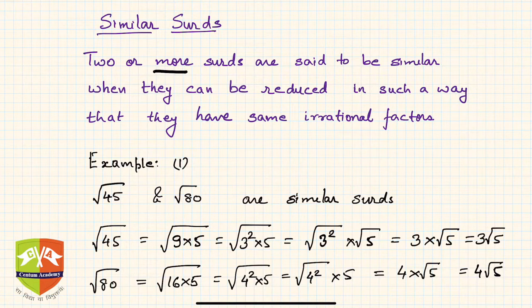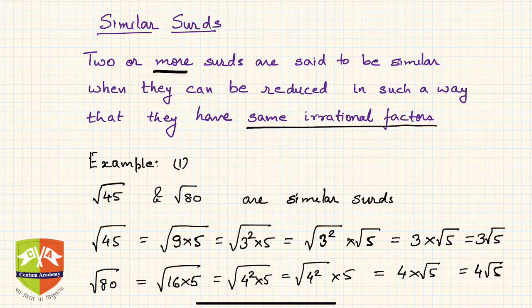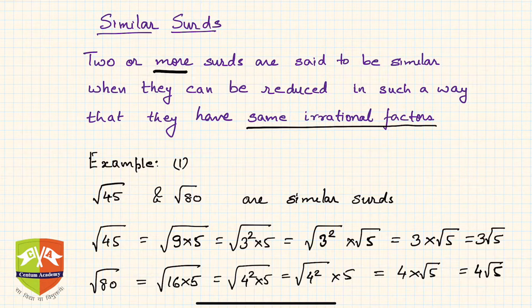Two or more SIRDs are said to be similar when they can be reduced in such a way that they have the same irrational factors. We learned how to convert a pure SIRD or a complete SIRD into a product of a rational and an irrational factor. So if after reduction the irrational factors are the same, then the SIRDs are called similar. Example: √45 and √80 are similar SIRDs.